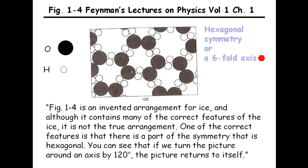Now, the hexagonal symmetry or a six-fold axis requires a rotation by 60 degrees and not 120 degrees.